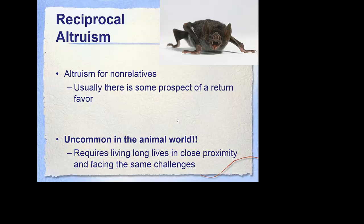When we look at reciprocal altruism, this is the idea that you can be altruistic toward non-relatives. We see this almost exclusively in humans, but there are examples of it in vampire bats. Vampire bats will tend to be altruistic toward non-relatives only if that individual has helped them before. So it's an interesting relationship where one helps the other, but they expect something in return.